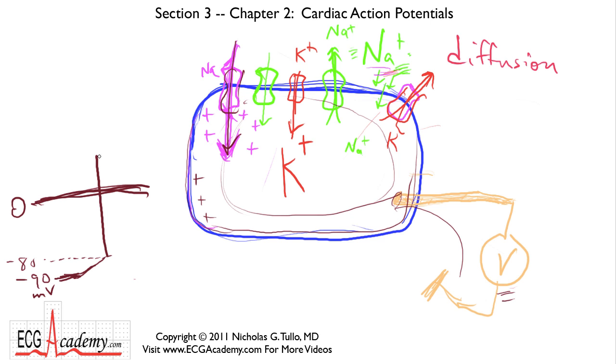It goes up above zero and stays there for a split second until finally the potassium gates open up, and potassium rushes out of the cell, bringing all these positive ions out and restoring the normal resting gradient of about minus 90 millivolts.